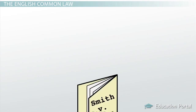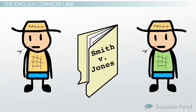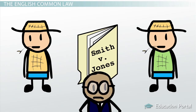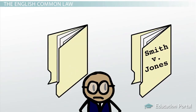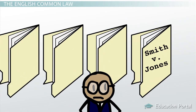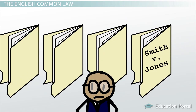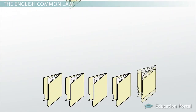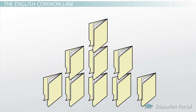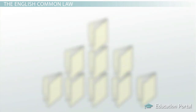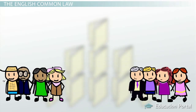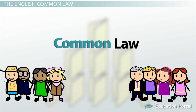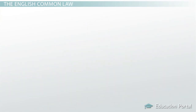Under English common law, disputes between two parties were handled on a case-by-case basis. However, the decision maker did not act without guidance. The decision maker was required to look to similar, previously decided cases and use those established guidelines and traditions. The customs of England were built upon and expanded for centuries, all through court decisions. By carrying forward and preserving these customs, the courts assured that the law was truly common to all.